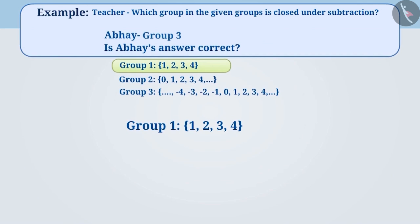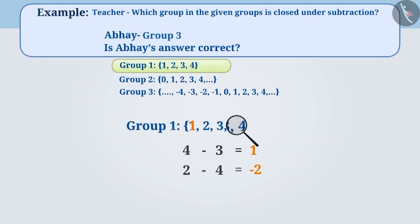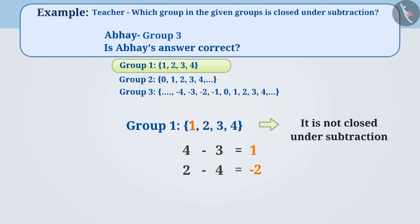By subtracting the larger number from the smaller number, we get a result which is also a number of the same group. But while subtracting a smaller number from a larger number, a negative number is obtained, which is not a part of group 1. Therefore, we can say that group 1 is not closed under subtraction.